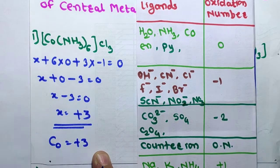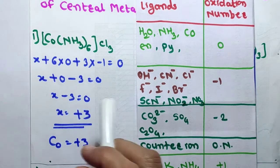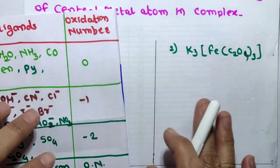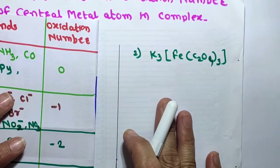Therefore X = +3. Cobalt has an oxidation number of +3 in this complex.